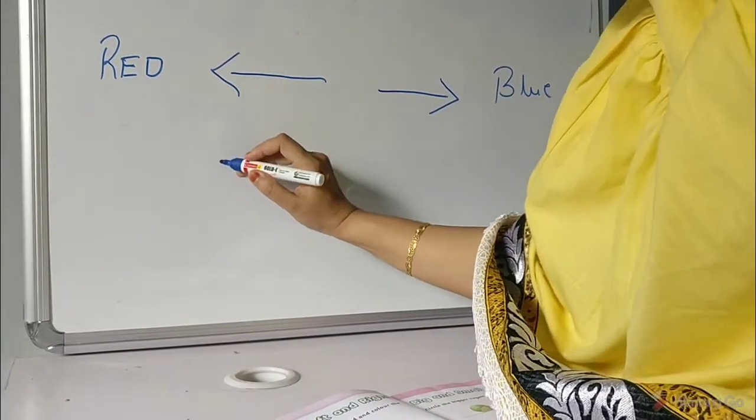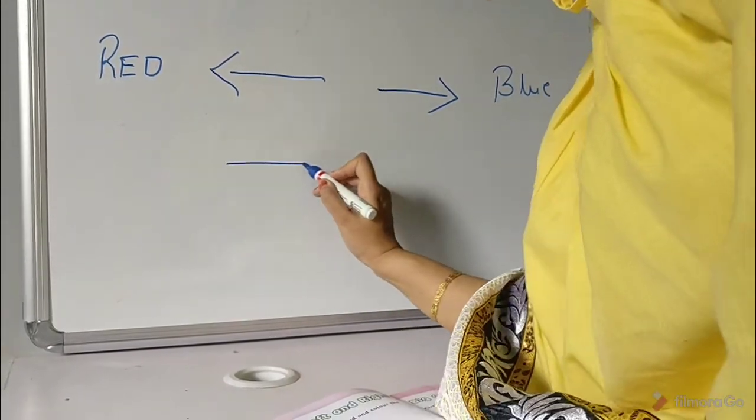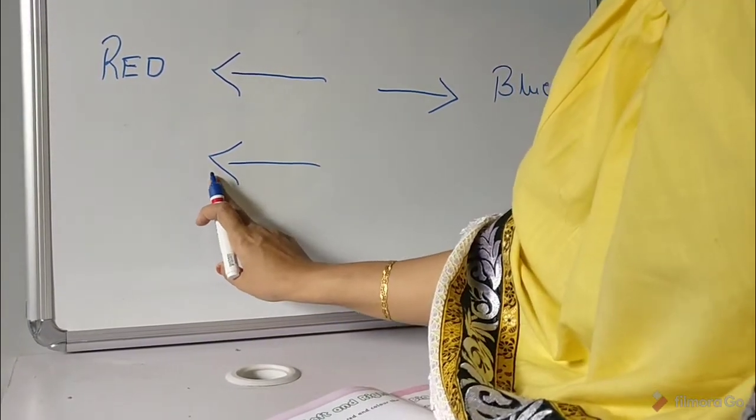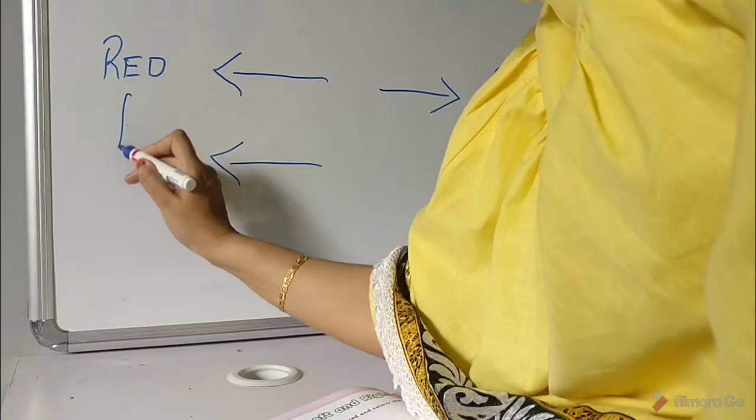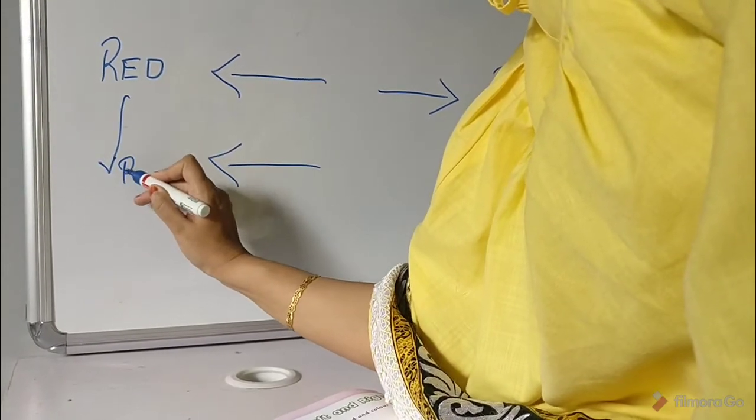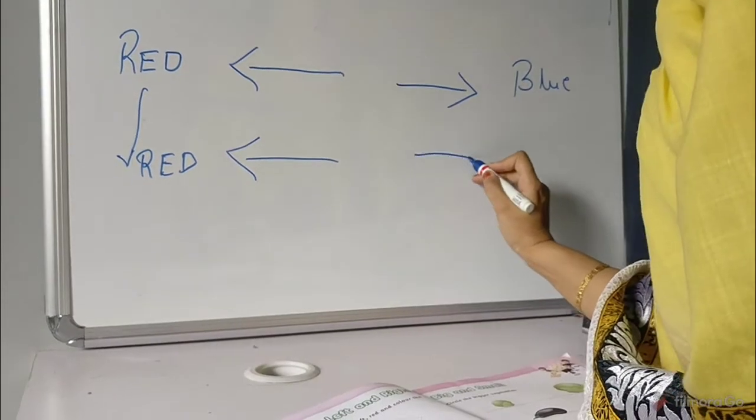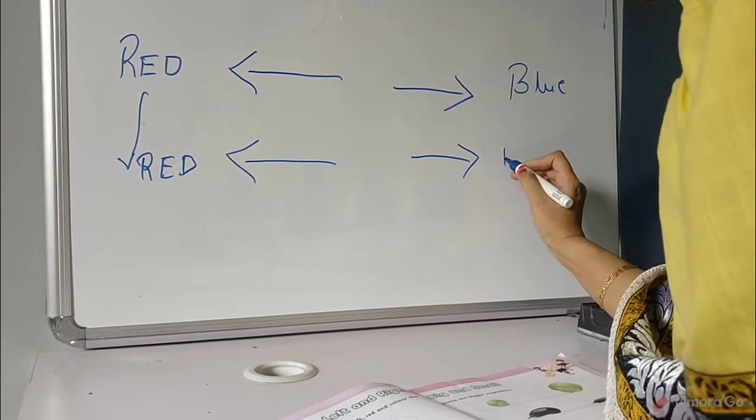Same way, with your mama's help, you will draw arrows. Again, this one is a left side arrow, so it will be the same red color. And this is the arrow on the right side, so it will be blue color.